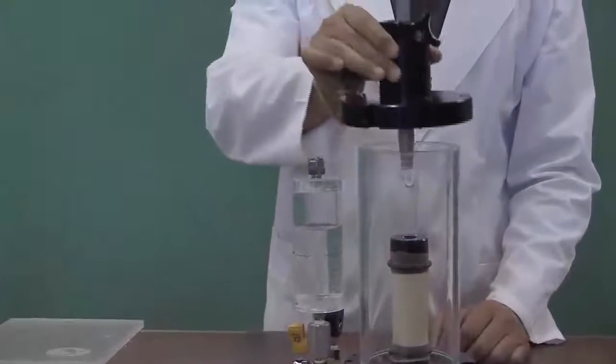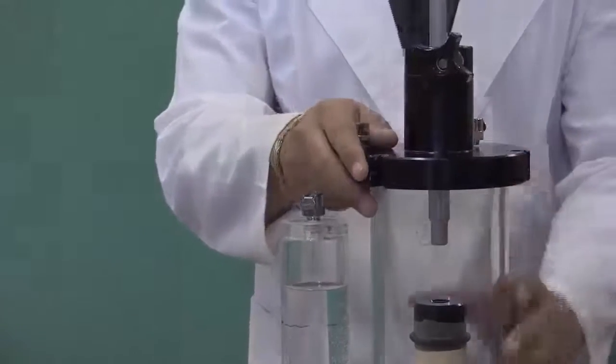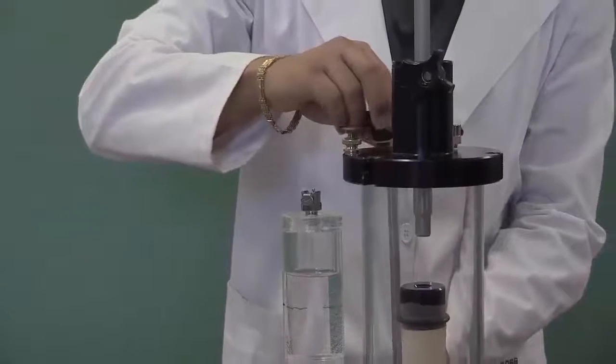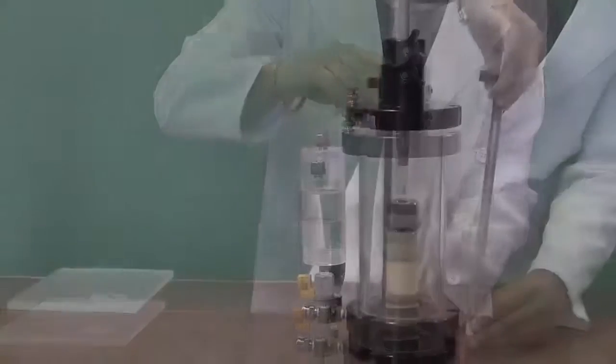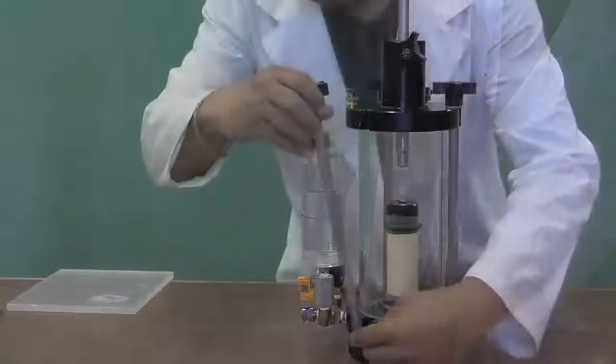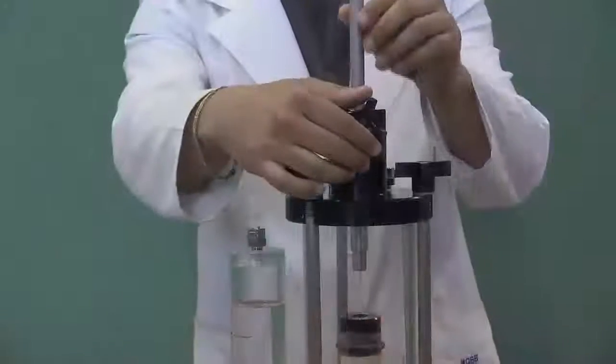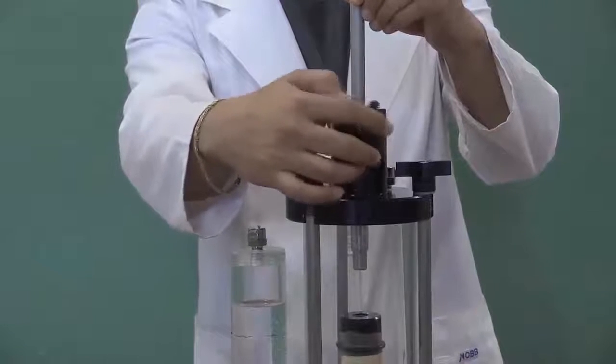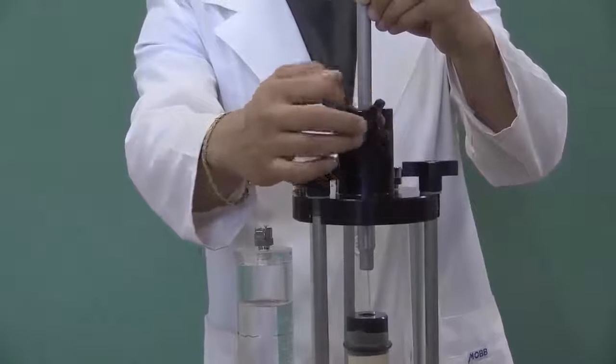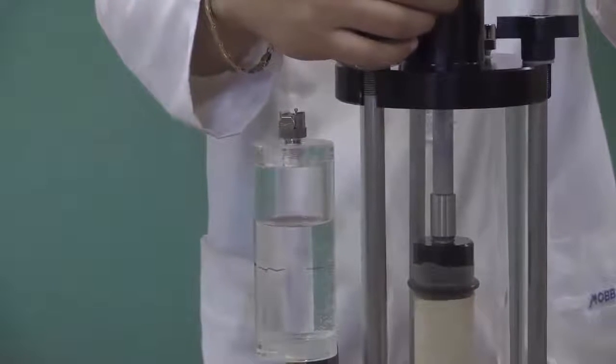Place the cell cap on the cylinder and assemble the cell using the connecting rods. Loosen the wing nut out of the loading shaft and gently slide it into the top cap. Then, tighten the wing nut to hold the shaft in place.